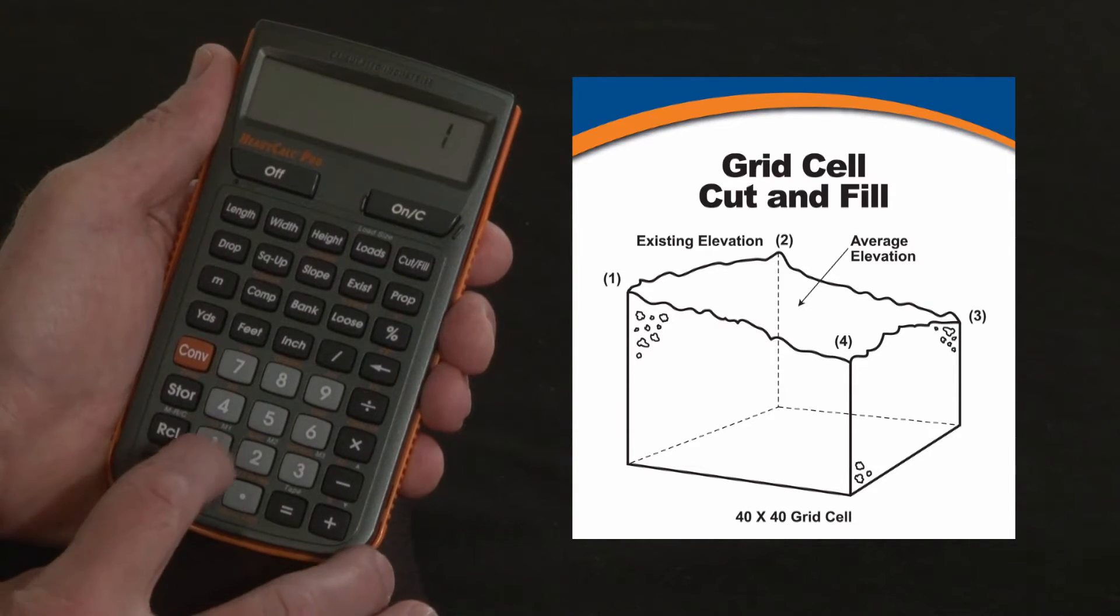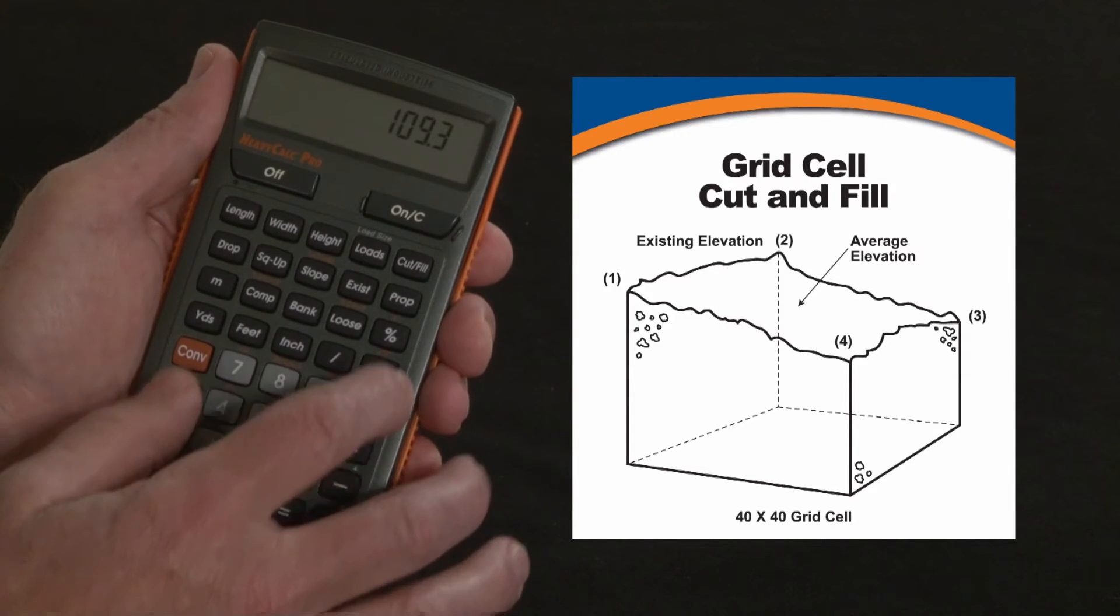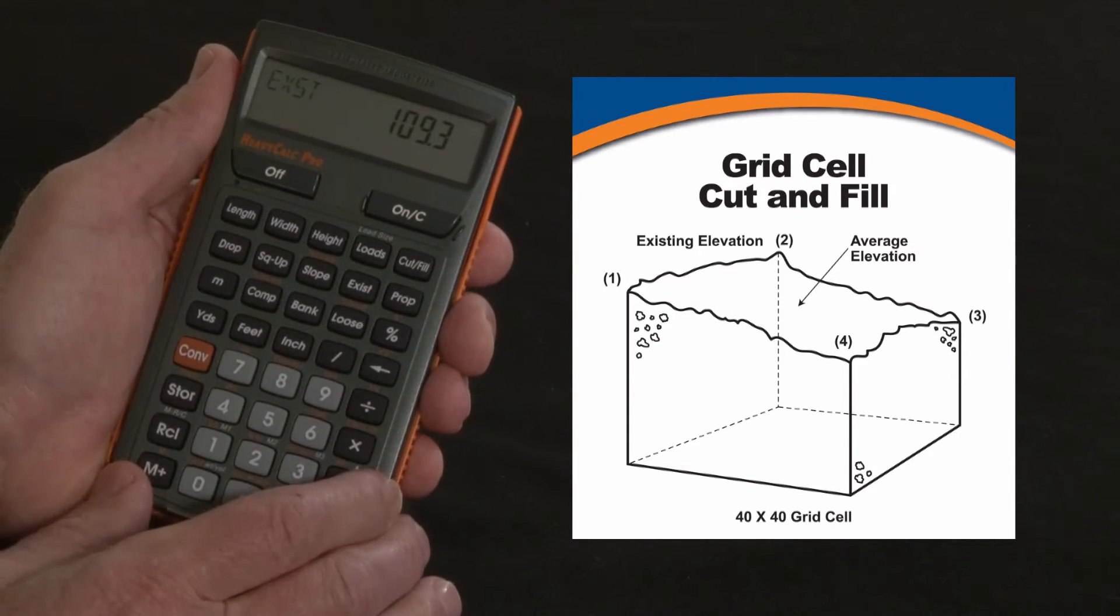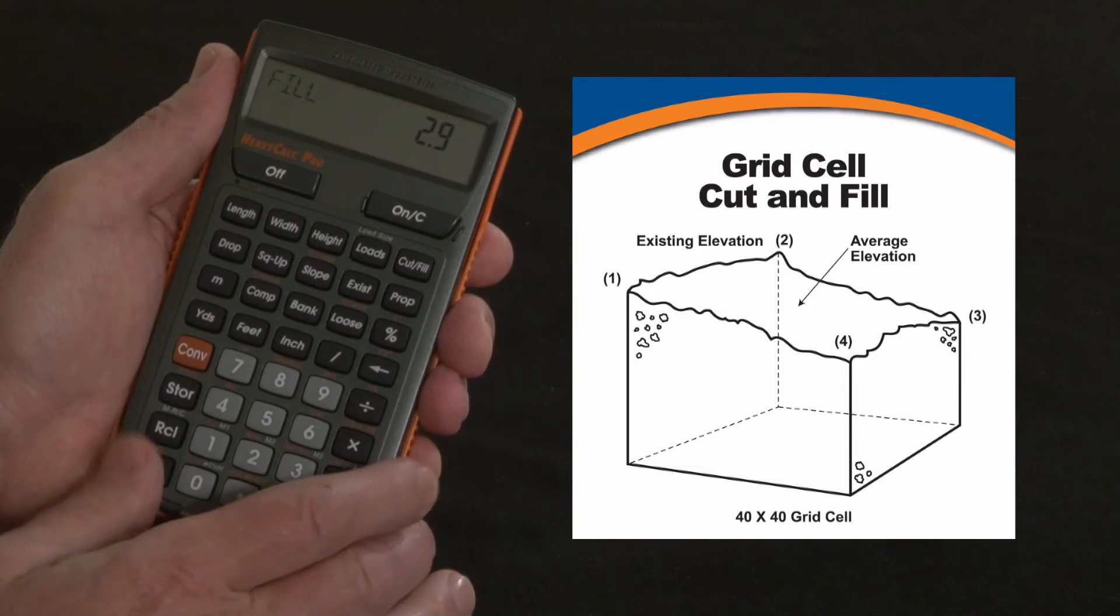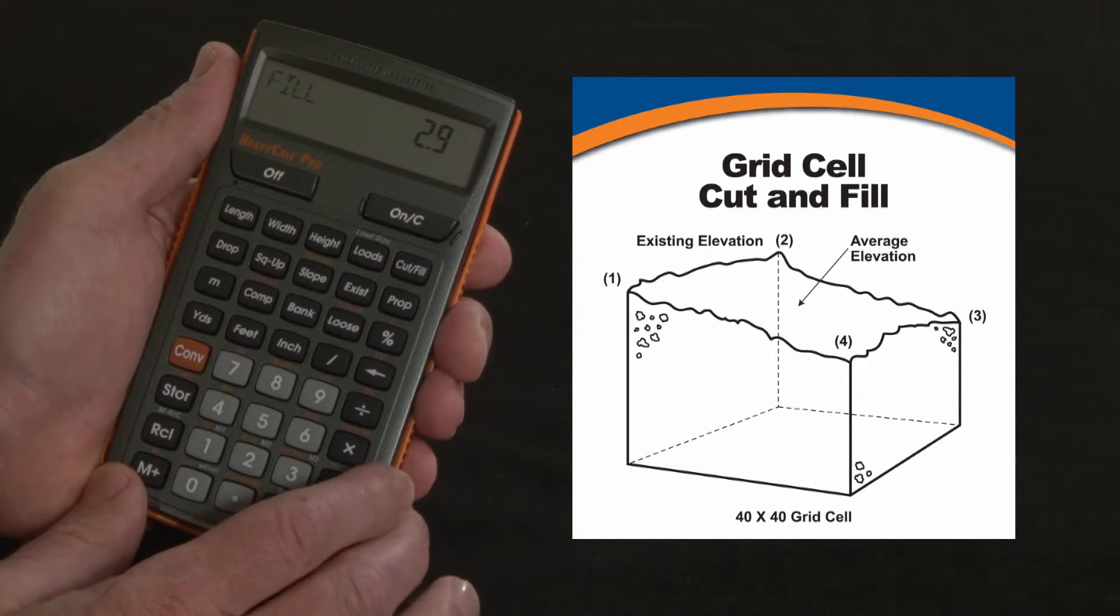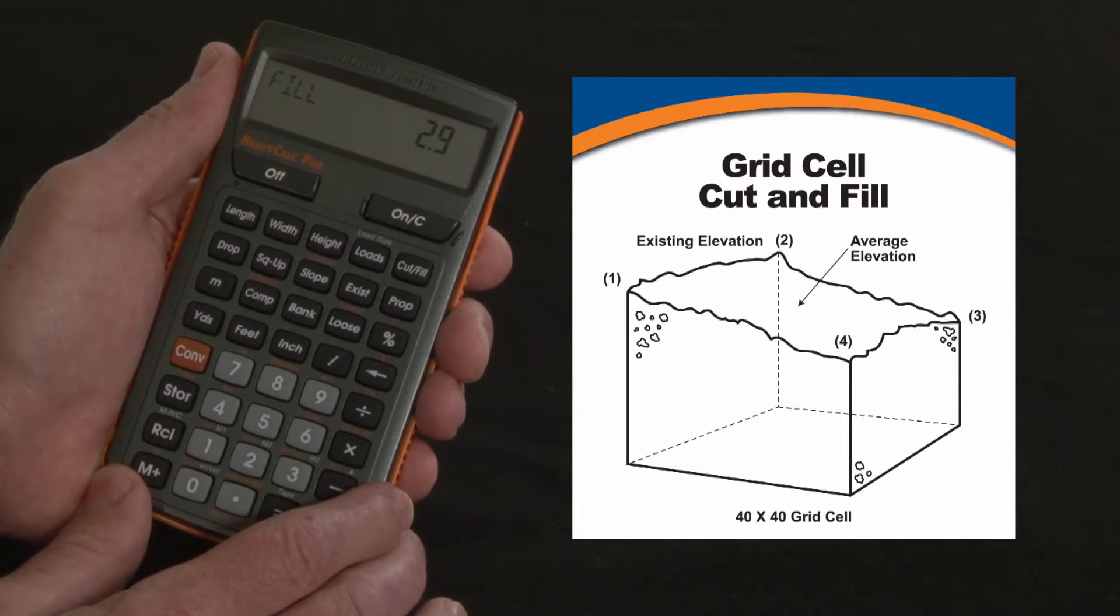You take a shot and you measure 109.3 is the existing, so what are you going to do? You hit the cut fill key and of course you're going to fill 2.9 at that particular location. You can mark the stake that way.